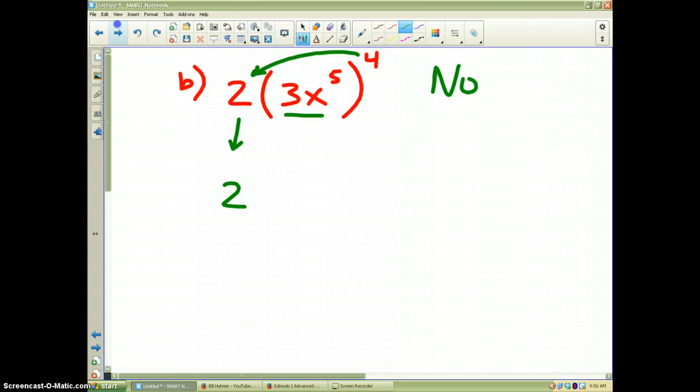So, therefore, I'm just going to bring the 2 straight down. Now, inside the parentheses, the first thing I see is I have 3 to the first power and then the 4 on the outside. So, that makes times 3 to the fourth power. And then, I have the x to the fifth to the fourth power. I'm going to times those exponents and get x to the 20th.